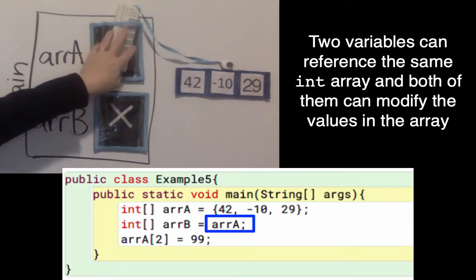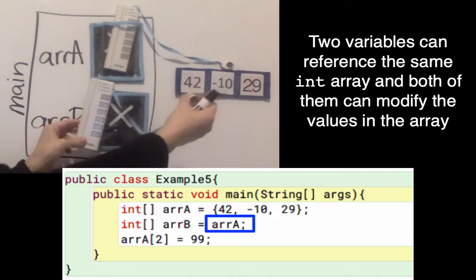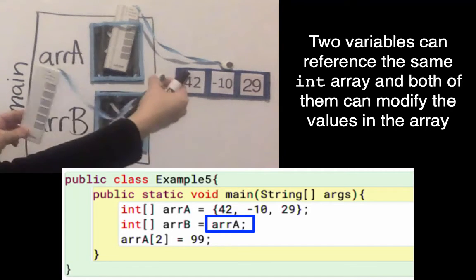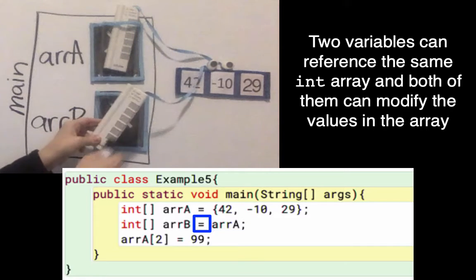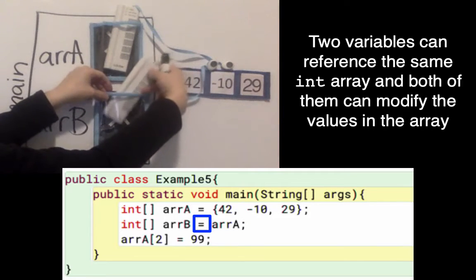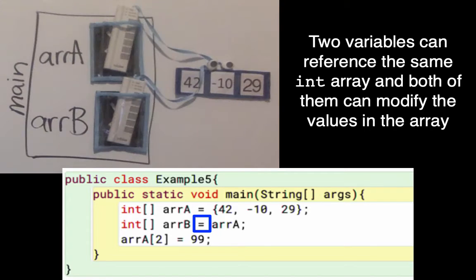What that means is I get a copy of that remote control. To have it be a copy means it references that same array. The assignment statement, the equal sign, is going to set array B to be a copy of that reference that I got from array A.